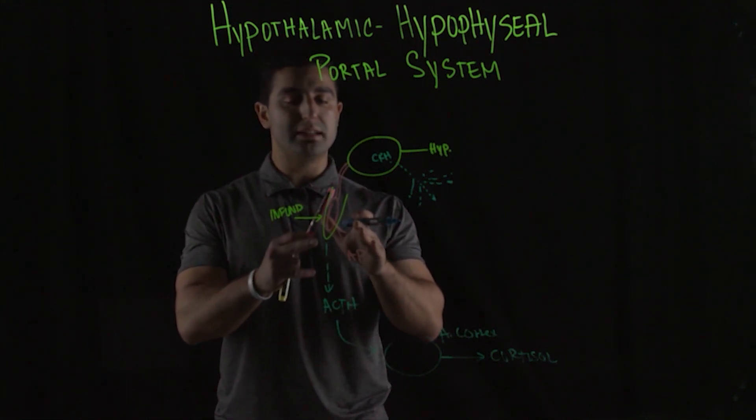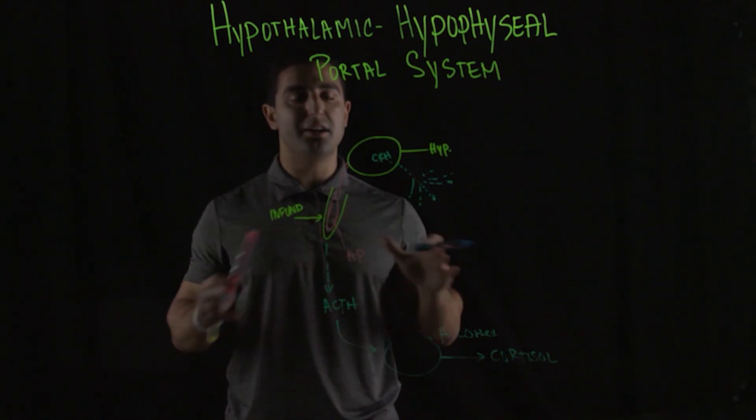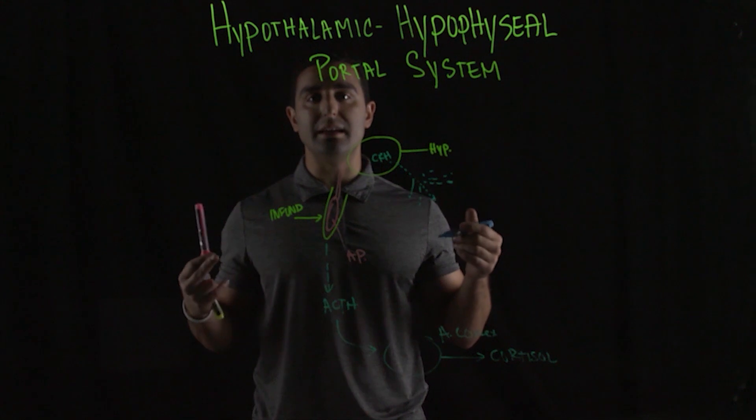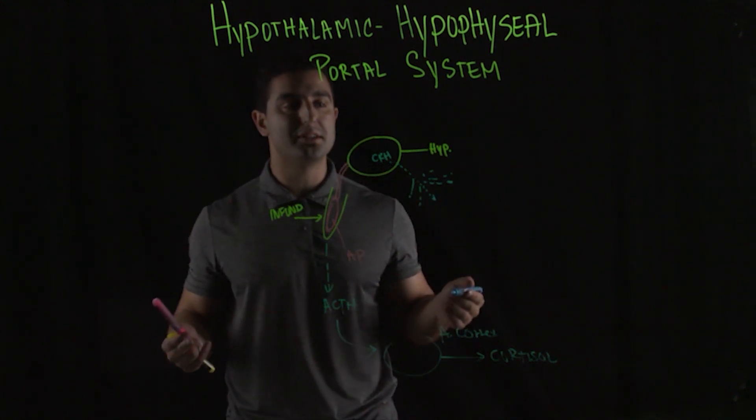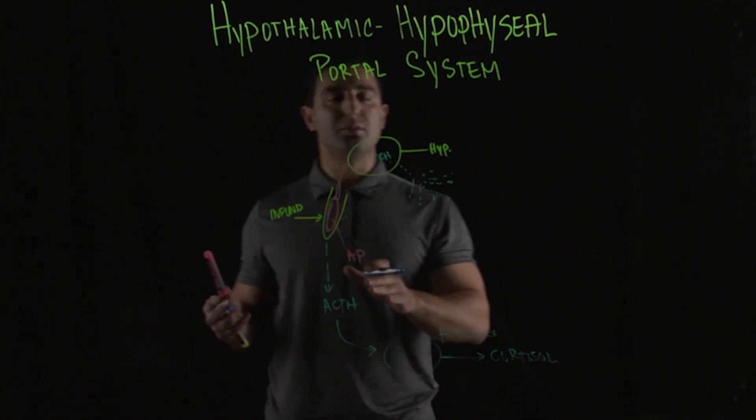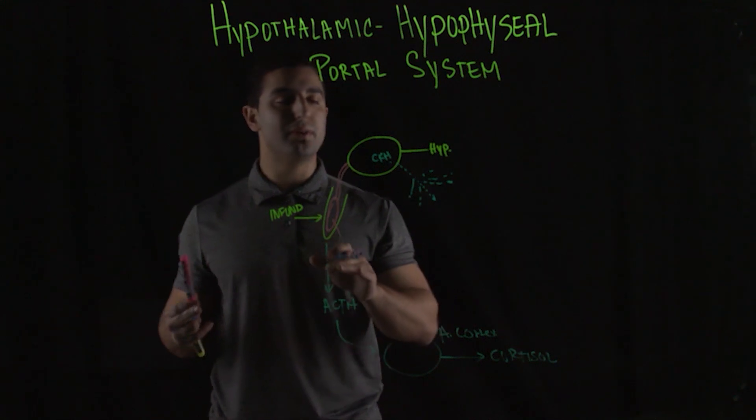Because the target cell from the anterior pituitary is already releasing at such high concentration, by the time it reaches the target cell, it still generates a sufficient response. And so the way the endocrine system works in this case is based off of the different signaling of the hormones.